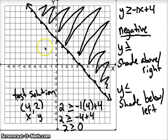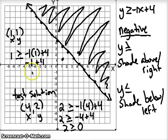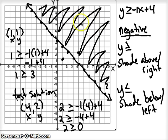Let's try one that shouldn't be true — (1, 1), which I didn't shade. Testing: is 1 ≥ -1(1) + 4? Negative 1 plus 4 is 3. Is 1 greater than or equal to 3? No, 1 isn't. So we shaded the right part — (1,1) is not a solution, and (4,2) is. You always want to shade the region that gives you solutions that make the statement true.